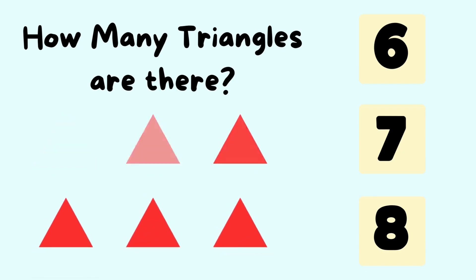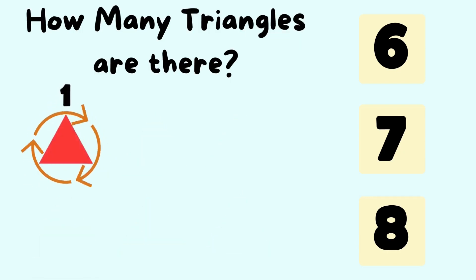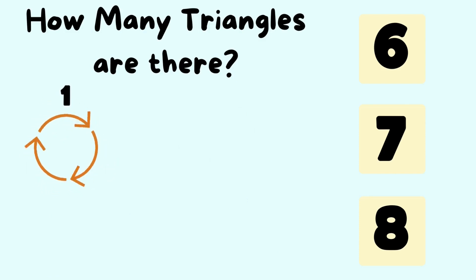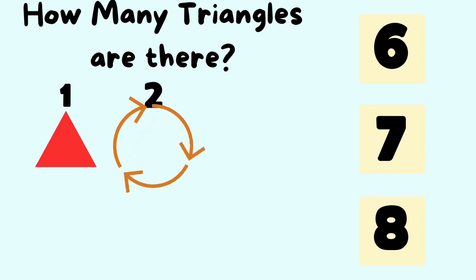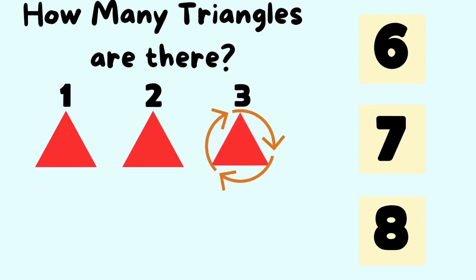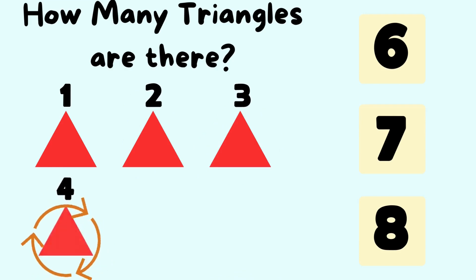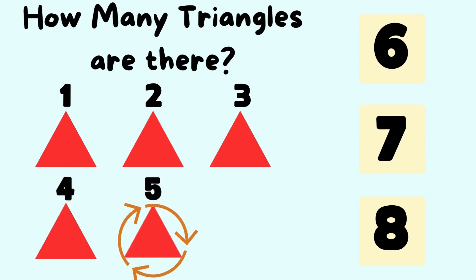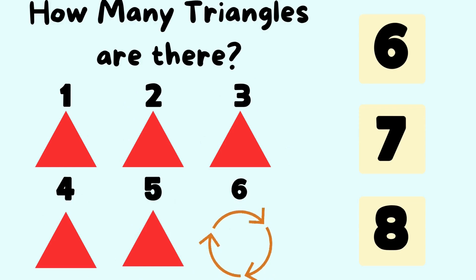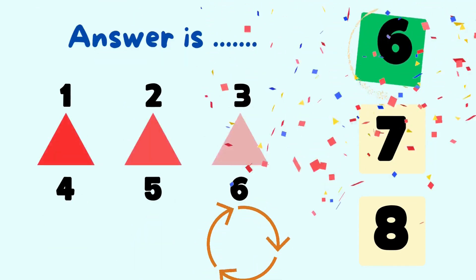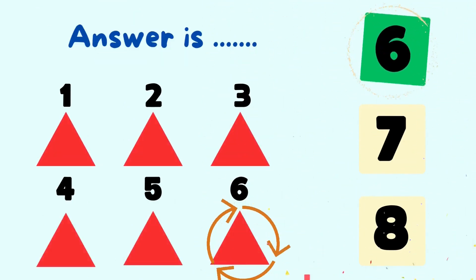How many triangles are there? Let's count the number of triangles. It is one, two, three, four, five, six triangles. So the answer is six triangles.